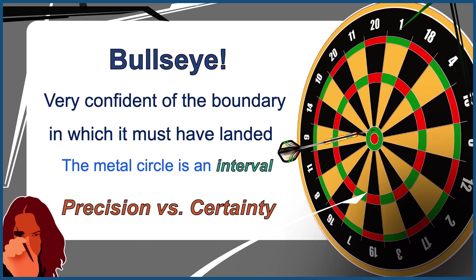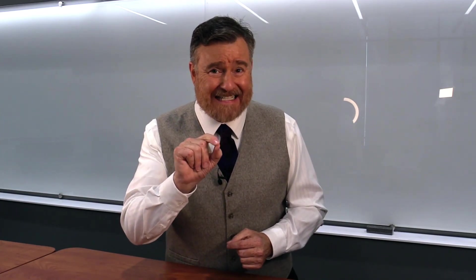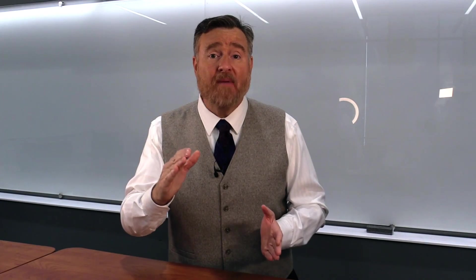You do have one thing going in your favor — you know an interval. If you place your dart anywhere inside that metal ring of the bullseye, you can be very confident that you are in the right general location. And if you're particularly clever, you'll place your dart in the exact center of the bullseye, further minimizing the error of your guess.